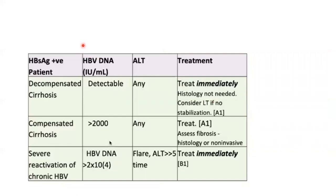For patients with cirrhosis, the APASL guideline is very clear: if it is decompensated cirrhosis, treat regardless of DNA or ALT levels, to prevent HCC formation — because once HCC develops, giving the drug shows no benefit. For compensated cirrhosis, treat even with detectable amounts of DNA, regardless of ALT levels. In reactivation of chronic hepatitis B with flare — if ALT is more than five times normal and DNA is elevated, treat immediately.